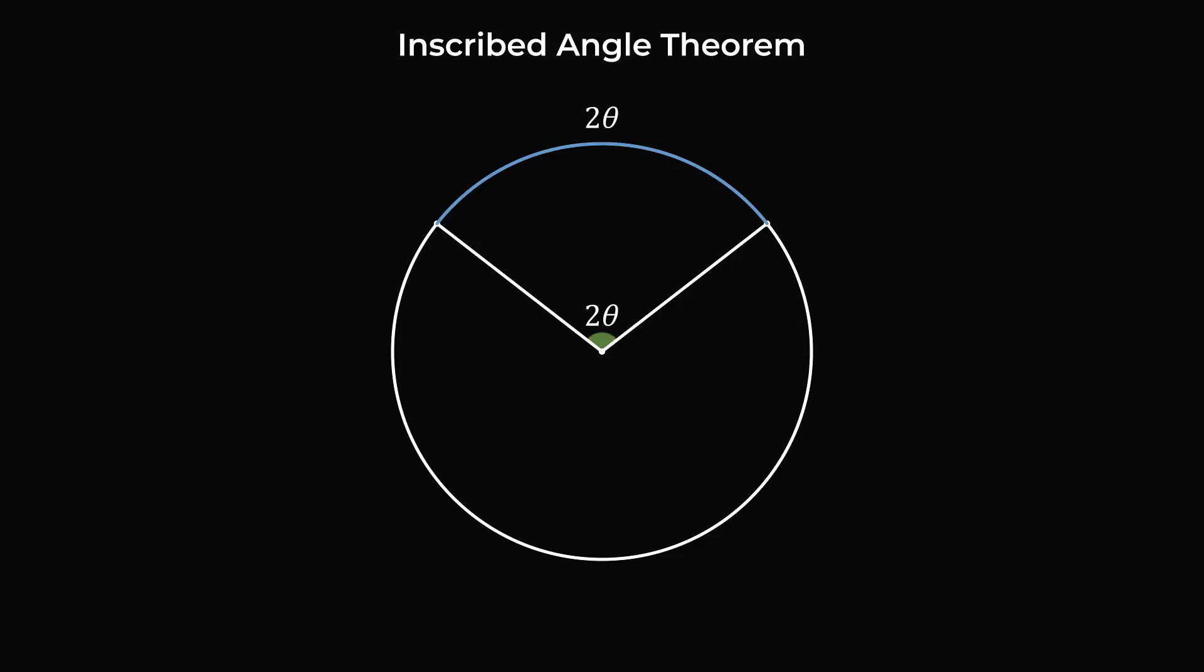Now let's inscribe an angle that subtends the same arc. This inscribed angle will have half the measure of the central angle or the arc, so this measure will be equal to theta. This angle will have the same measure no matter how we draw the inscribed angle. All of these angles will have the same measure of theta.